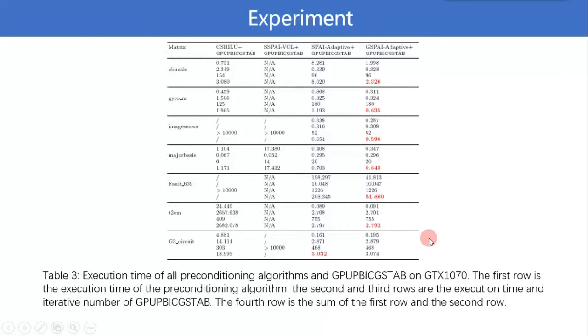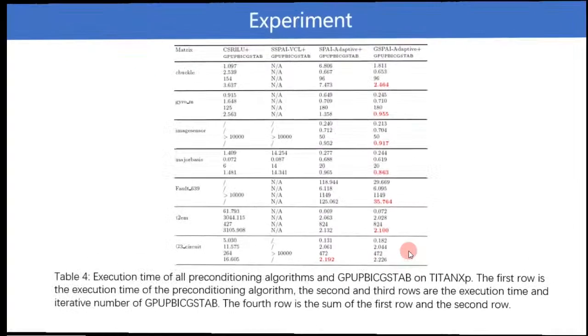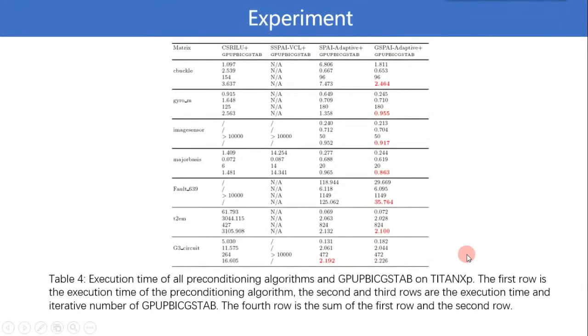the total time of GSPAI-Adaptive and GPU preconditioned BiCGSTAB is the smallest among all algorithms for all matrices except for the last matrix. Meanwhile, we can get the same conclusion from Table 4. This result indicates that GSPAI-Adaptive is advantageous over others, and significantly improves the performance of SPAI-Adaptive.